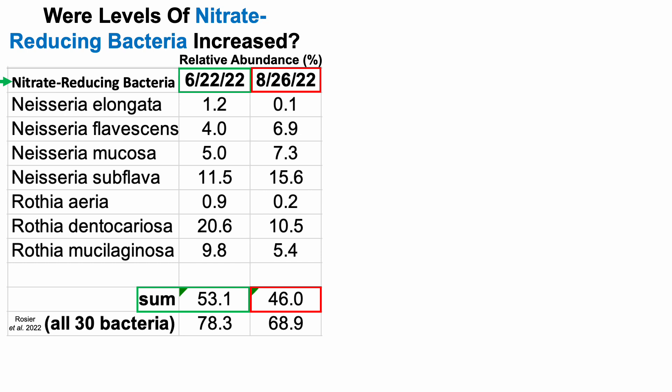When summing all 30 bacteria shown to have nitrate-reducing ability, that comes to 78% for test number one, and about 69% for test number two. So no matter how you look at it, nitrate-reducing bacteria were not increased despite having four grams per liter of potassium nitrate in the mouthwash.